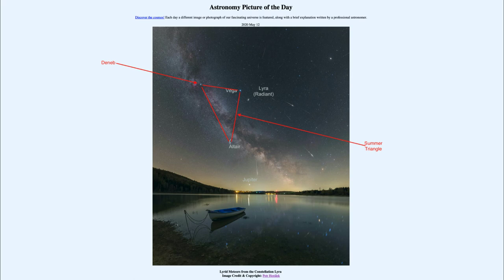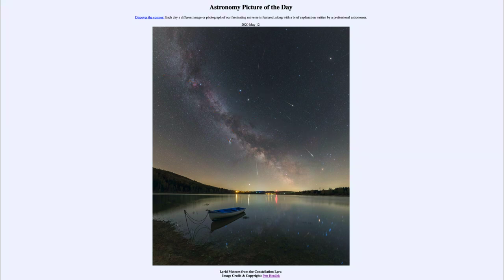In addition, we see the planet Jupiter, also present in the image and very close to our Milky Way galaxy. So there are a number of different objects visible: some very bright stars, the planet Jupiter, the Milky Way galaxy, and of course the Lyrid meteors — a good number of which occurred during the exposure of this image.